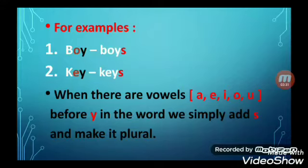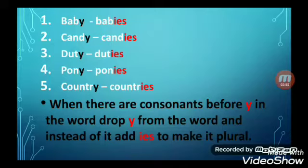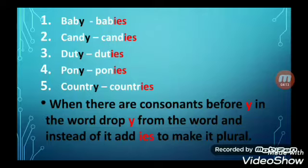Now have a look at these words: baby→babies, candy→candies, duty→duties, pony→ponies, country→countries. In these words, before Y, the letters B, D, T, N, R are there, and these are all consonants. So when there are consonants before Y, we remove Y from the word and instead add IES, as in the above examples.